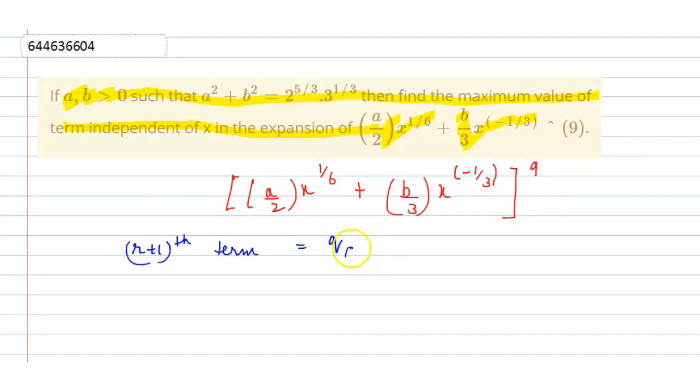9Cr (ax raised to the power 1/6) (bx raised to the power minus 1/3) whole raised to the power 9 minus r. So this is the r plus 1th term,